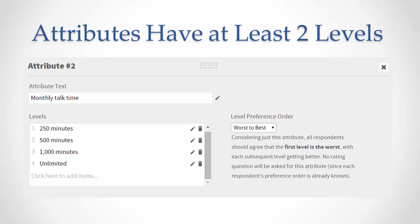All other attributes held equal, we know every rational respondent would prefer more talk time to less, so this attribute's levels are ranged from worst to best, meaning the first level, 250 minutes, is worst, and the last level, unlimited, is best.